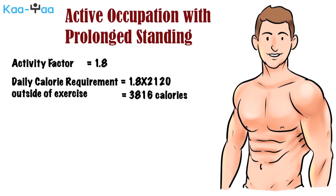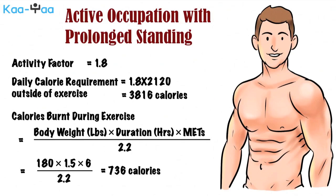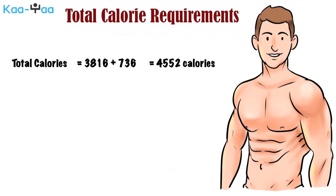On days when he is not performing exercises, he needs to consume 3,816 calories. On days when he performs exercise, he will need to add the calories expended during that exercise. The calories burnt during exercise is the product of his body weight in pounds, exercise duration in hours, and metabolic factor in METS, divided by 2.2. Assuming he performs intense free weight training for an hour and a half, the METS for such an exercise is 6, so his calories burnt during exercise will be 180 times 1.5 times 6 divided by 2.2, which equals 736. His daily calorie need on a weight training day is therefore 3,816 plus 736, or 4,552 calories.